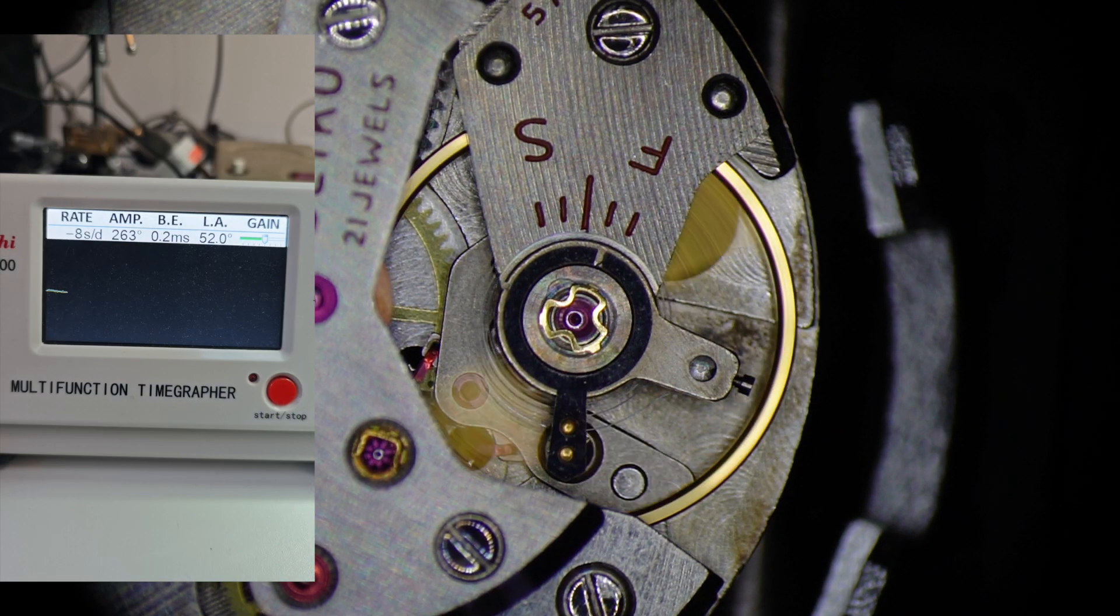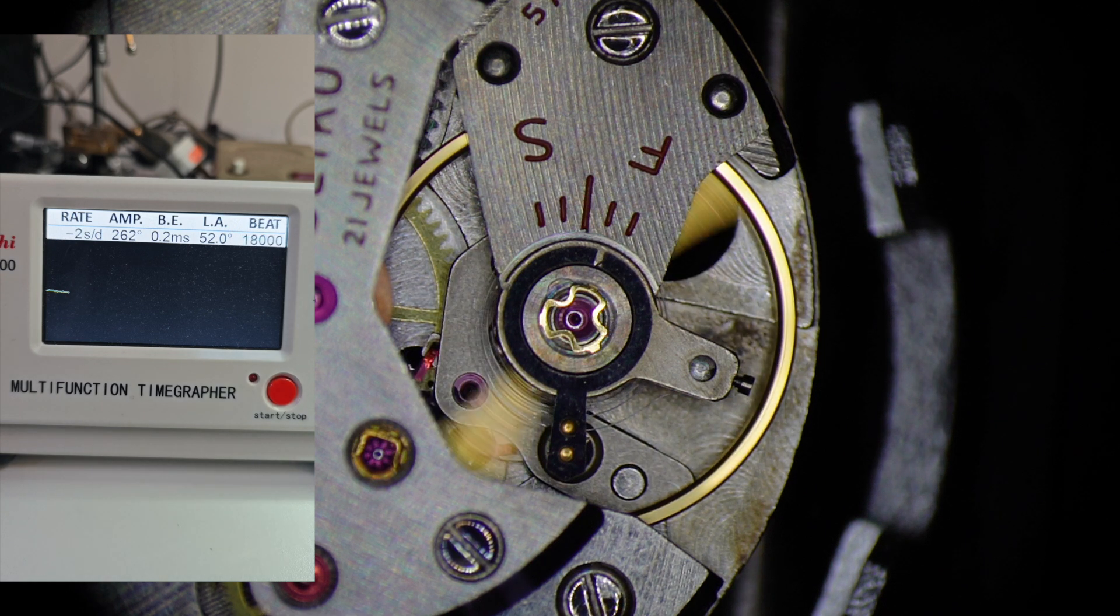We start by taking a timegrapher measurement at the default lift angle of 52 degrees.